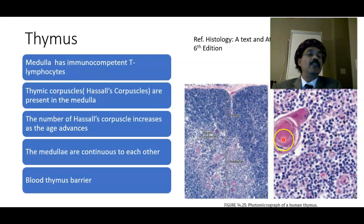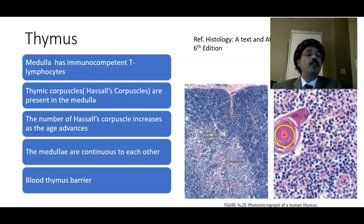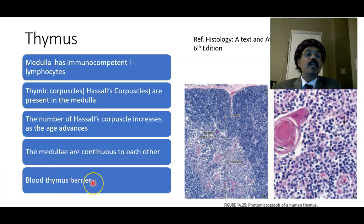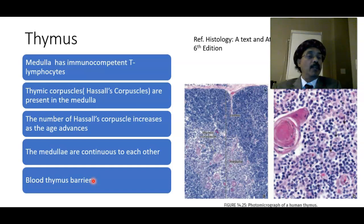As age advances, the number of thymic corpuscles — also called Hassall's corpuscles — increases. The blood-thymus barrier is formed by multiple structures: the epithelial reticular cells, the blood vessels, and the perivascular connective tissue.